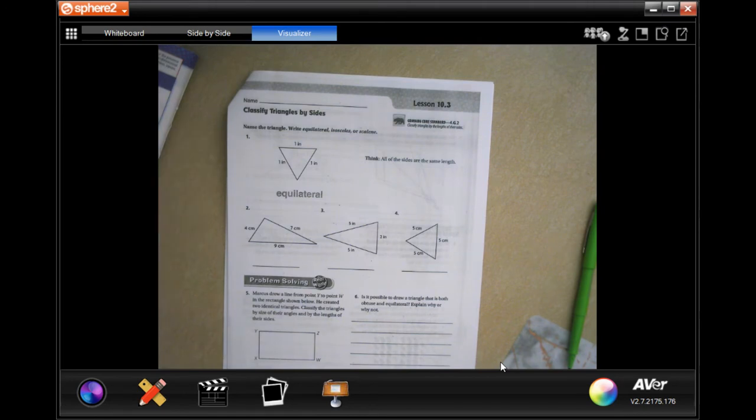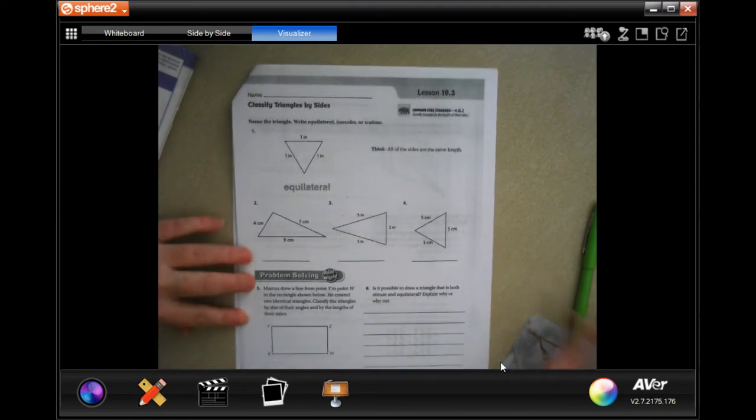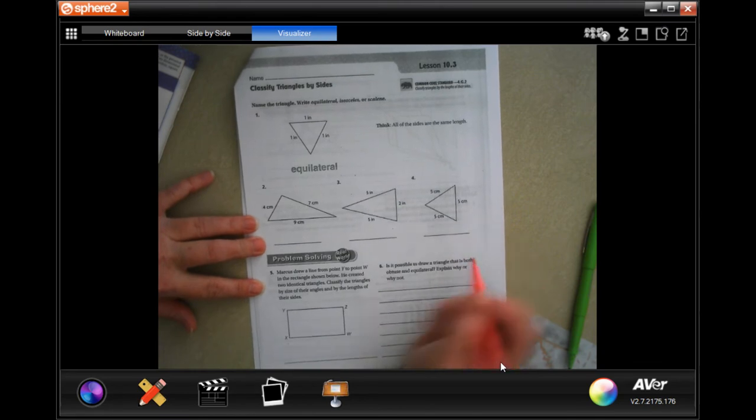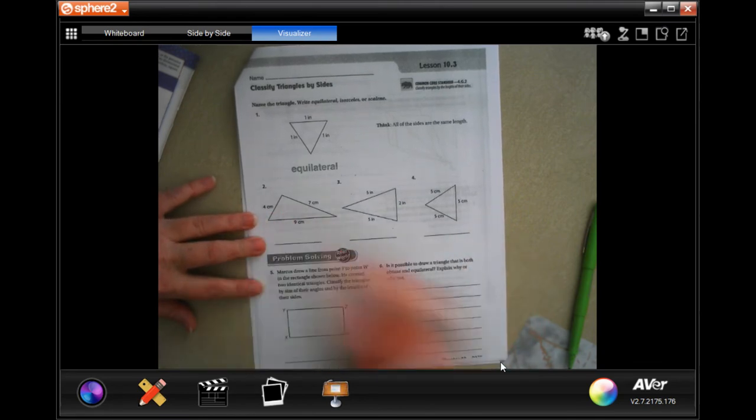We're going to go ahead and classify these as equilateral, isosceles, or scalene. We're going to get started with number two. None of these sides are the same, one of them would tip the scale.